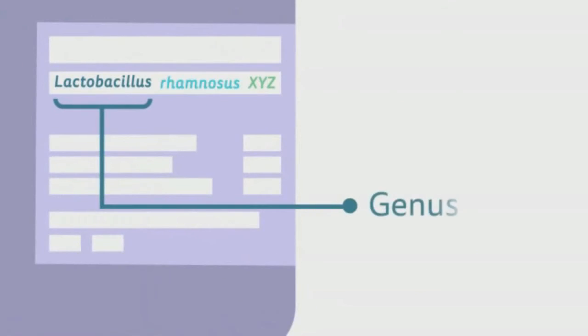Each probiotic should be described by a genus and species name, and then, even more specifically, by a strain designation.